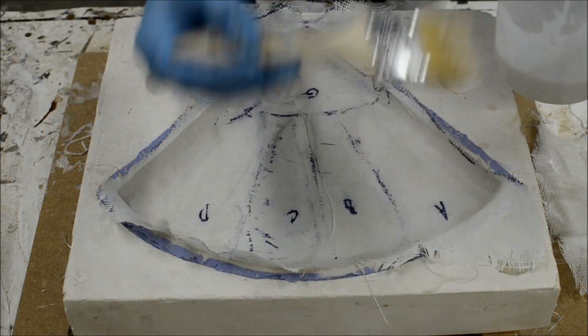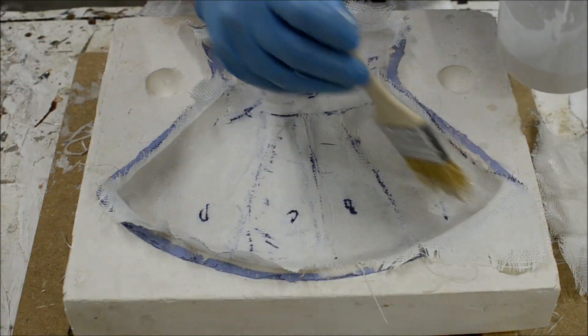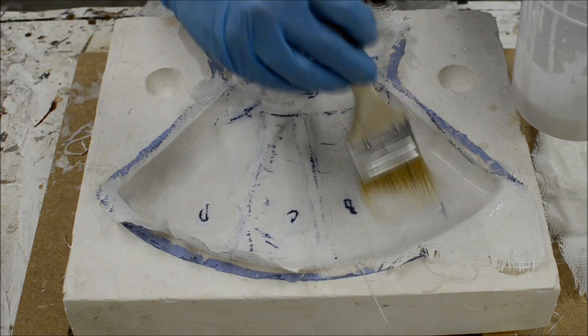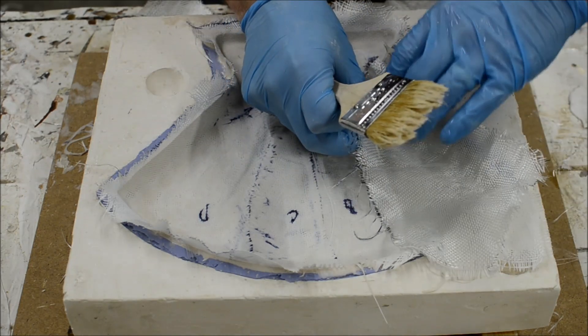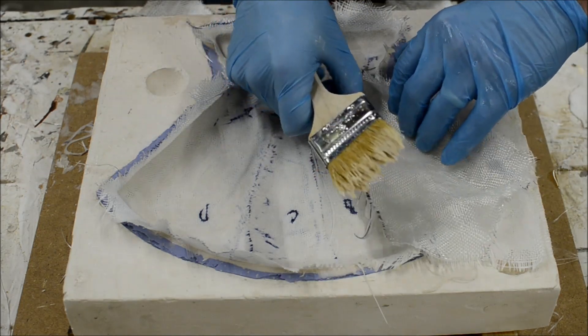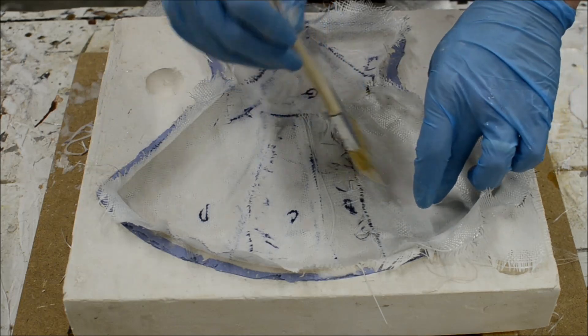Once you have one layer of the mold completely covered, begin covering with the second layer in the same manner, but crisscross the strips over the seams of the previous layer so that the strands are running in a perpendicular direction.